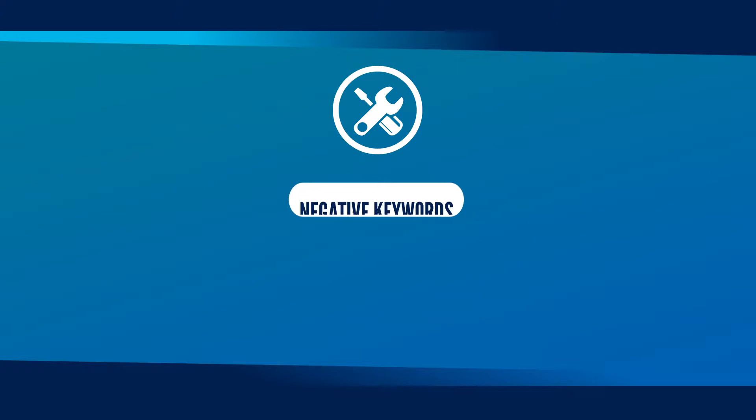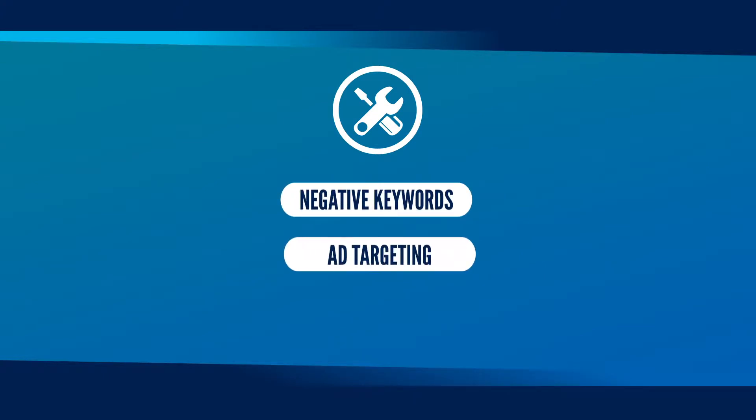For starters, there are three simple but powerful tools you can use to improve your campaigns: negative keywords, ad targeting, and dynamic text.